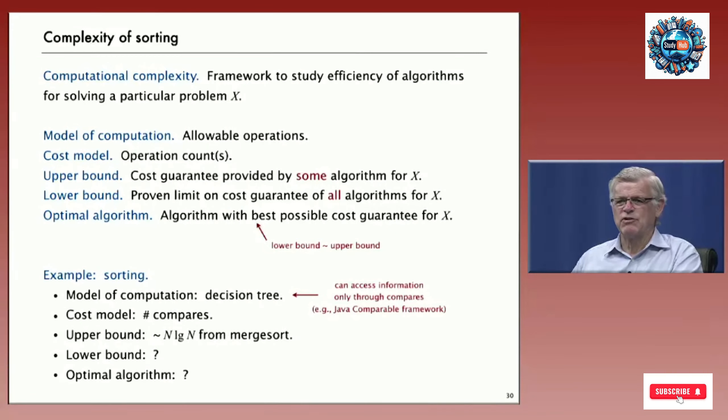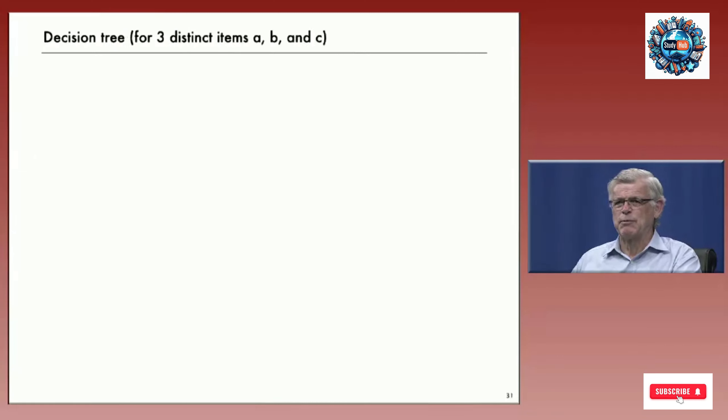The model of computation is what's called a decision tree. And what that means is that all we can use is compares. That's the only way we can access the data. So, our cost model is the number of compares. Merge sort provides an upper bound. That's an algorithm that's guaranteed to get the sort done in time proportional to N log N. And what we'll look at now is the lower bound. There's a trivial lower bound, which says you have to look at all the data - that's N. And we'll look at a better lower bound and see that merge sort is optimal.